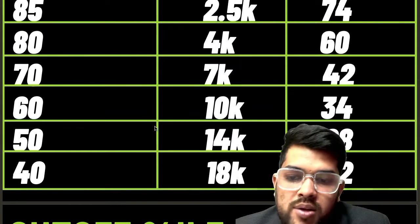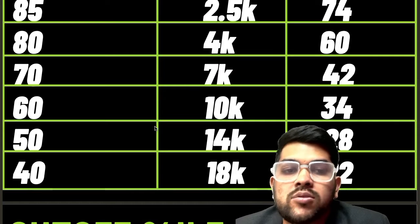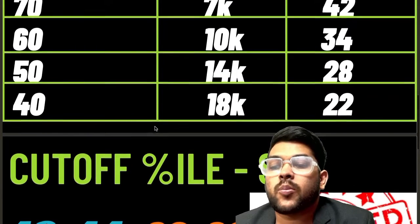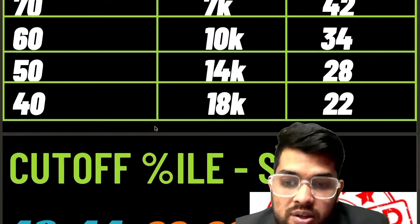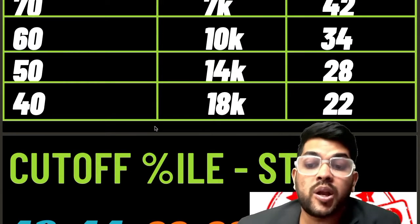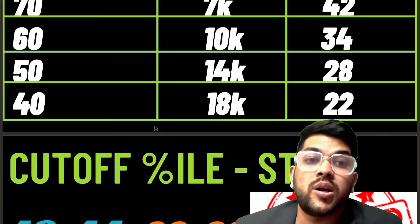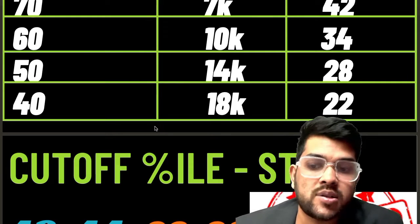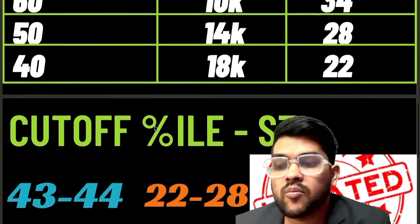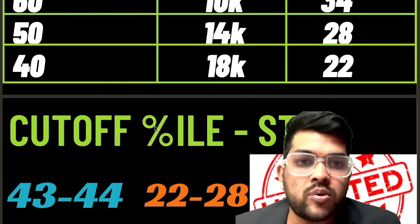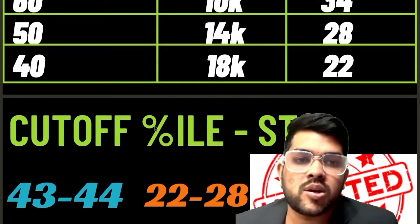For 50 percentile, 28 marks are required and the ST category rank will be 14,000. For 40 percentile, 22 marks are required and rank will be 18,000 in the ST category. Now, regarding the minimum percentile for ST category students to be eligible for the JEE Advanced examination, it will be 43 to 44 percentile.